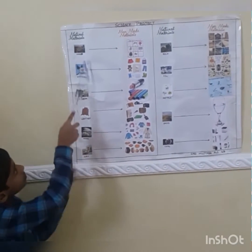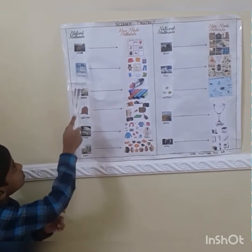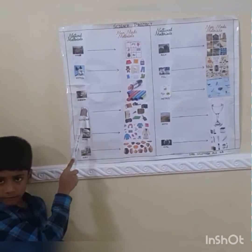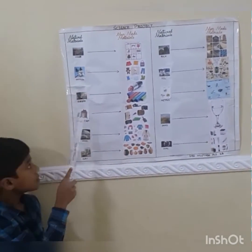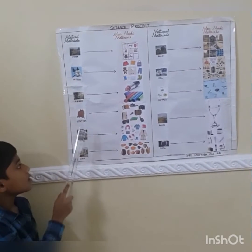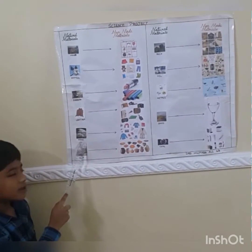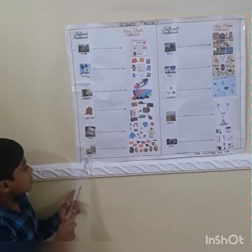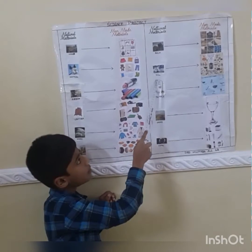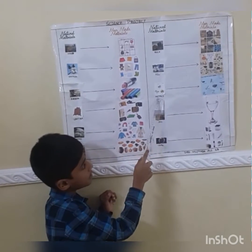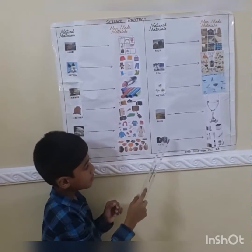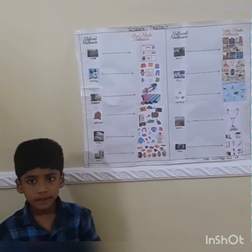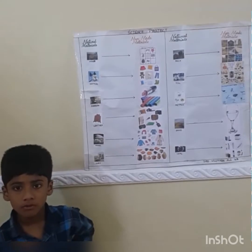Natural materials include: wool, cotton, rubber — we get from trees — leather, wool we get from animals, clay, rock, oil, metals, sand, and coal we get from the ground.